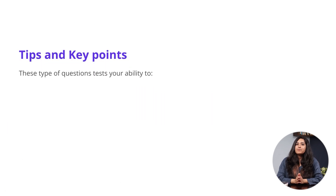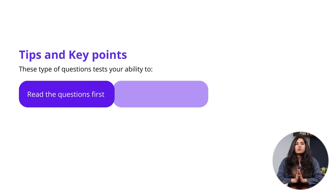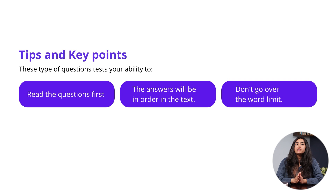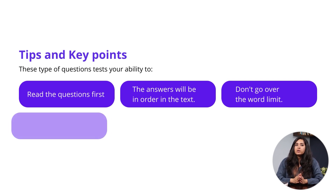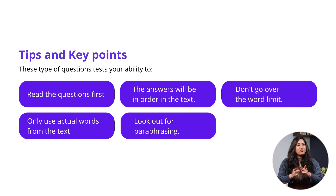Let's look at some tips and key points. Point number one is a repeat point — it works for all question types, but we're going to emphasize this again. The next point is quite a helpful one: the answers will be in order in the text. Next, it's important to note the instructions and not go over the word limit, and while doing so, only use words from the passage. And last but not least, our favorite tip: look out for paraphrasing.